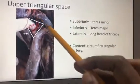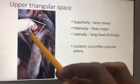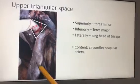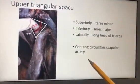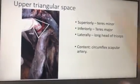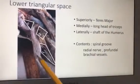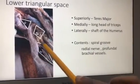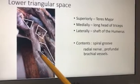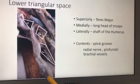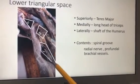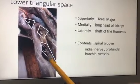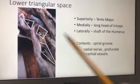The upper triangular space: superiorly, teres minor; inferiorly, teres major; laterally, the long head of triceps. Its content is the circumflex scapular artery. The lower triangular space: superiorly, teres major; medially, the long head of triceps; laterally, the shaft of the humerus. Its contents are the radial nerve and profunda brachii artery, which travel in the spiral groove.